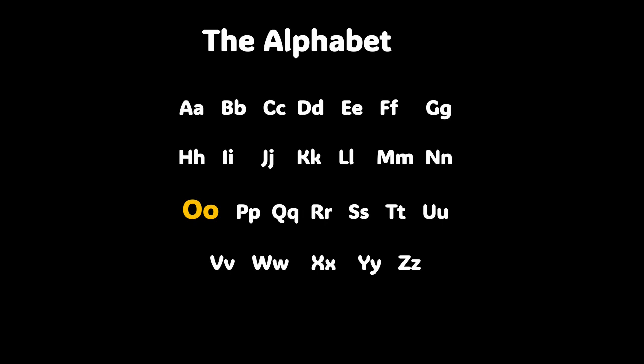Boys and girls, here is our alphabet — the alphabet we use in the English language. Other languages use this alphabet too, and there are 26 letters in the alphabet. But we're going to focus on just one, and that is the letter O. Let's keep learning.